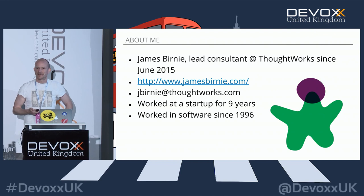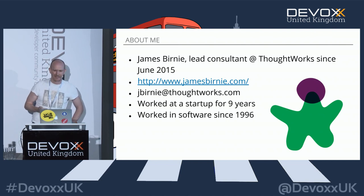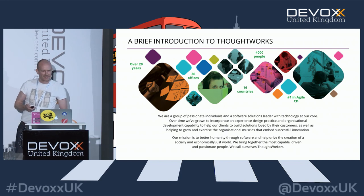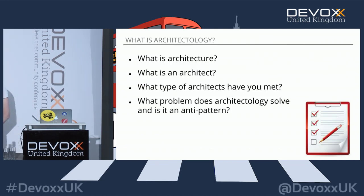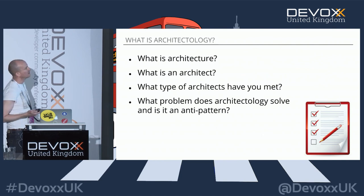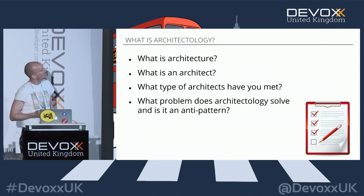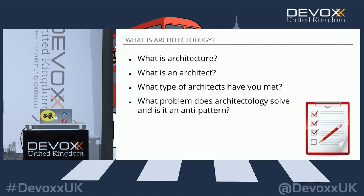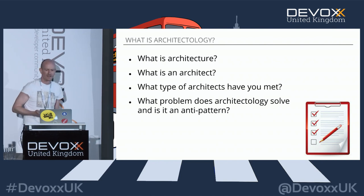I won't dwell too much on this — I've only got 15 minutes. I work for ThoughtWorks; you may have heard of us. Here's what I'm going to talk about today: what is architecture, what's an architect, what types of architects have you met, what is architectology, what problem does it attempt to solve, and my assertion is that architectology is an anti-pattern — I'll take you through briefly why that is.